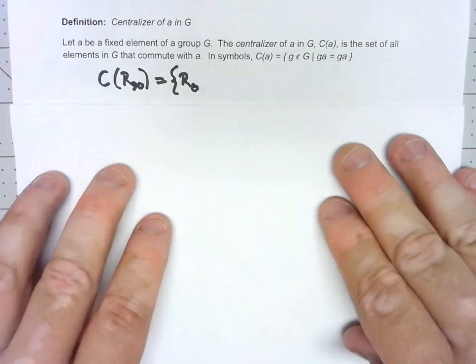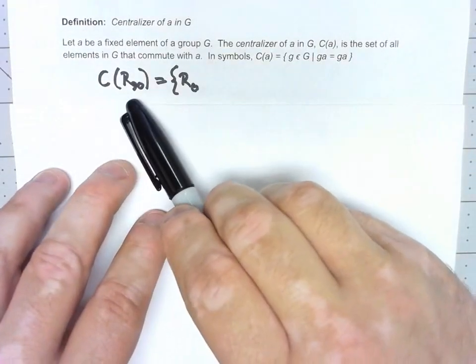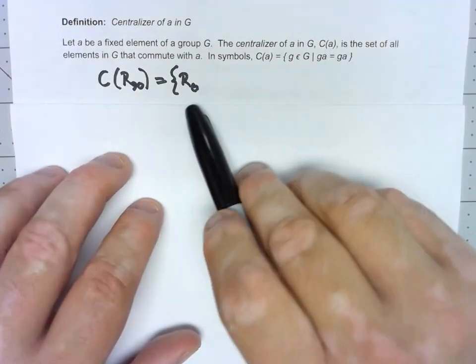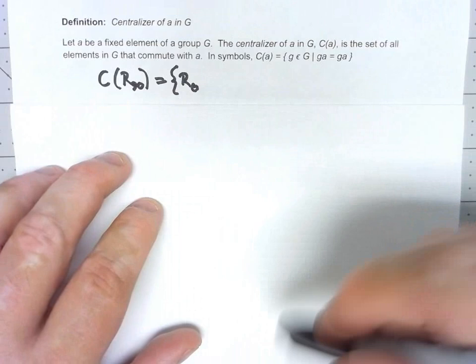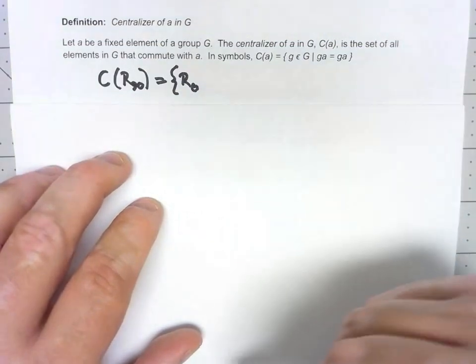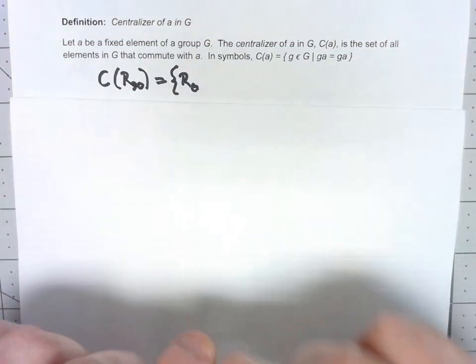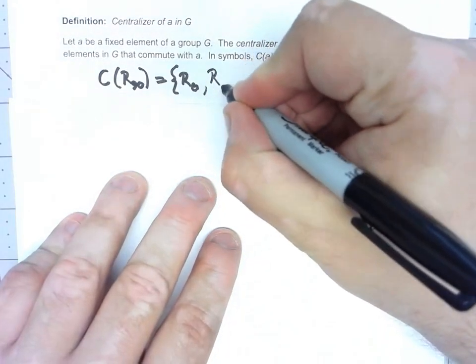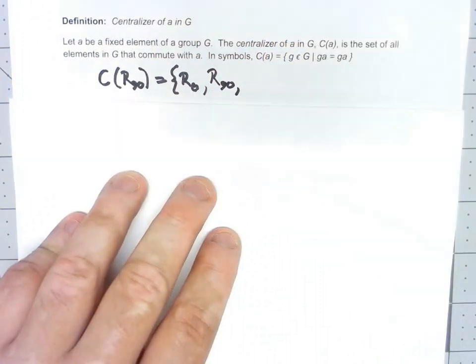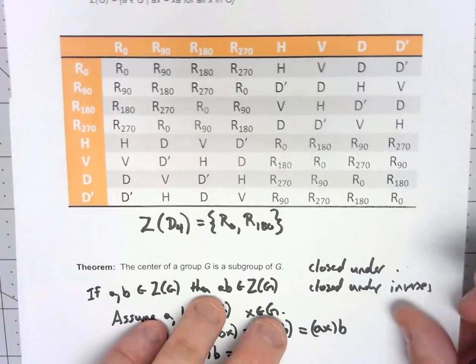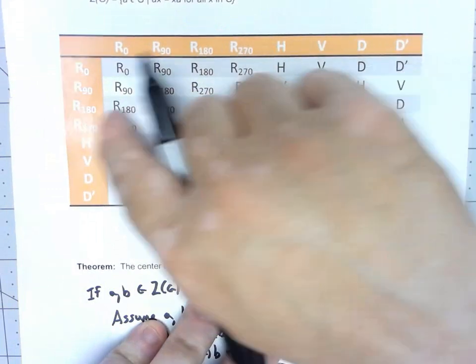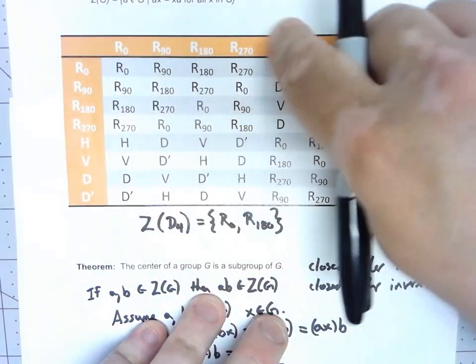So let's start by trying to figure out what is the centralizer of R90 in D4. I started out by just saying that R0 is in there because of course the identity commutes with everything. Also it shouldn't take too much thought to understand that an element always commutes with itself. But if we look at our Cayley table for D4, it turns out that the rotations always commute with all other rotations.